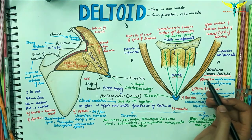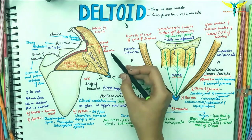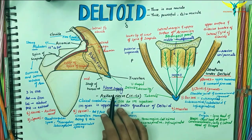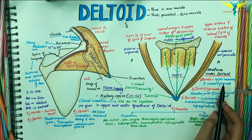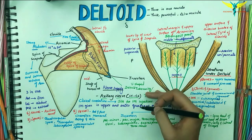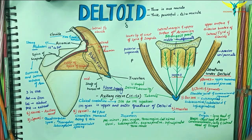So this is all about the origin, insertion, nerve supply, clinical aspect, and the structures under cover of the deltoid.